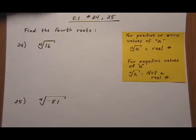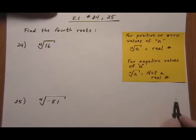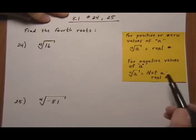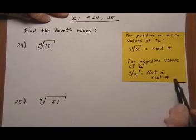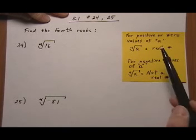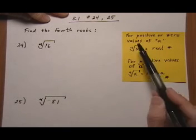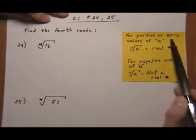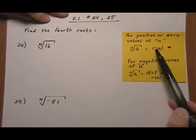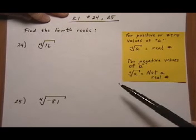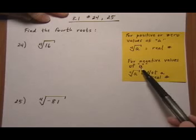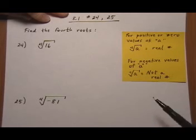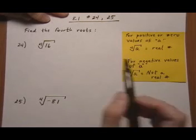Section 8.1, numbers 24 and 25. Find the fourth roots for the following problems. We're going to be using the properties on the right here, which are just like the square root properties, but they are different than the cube root properties. So for a fourth root, for positive or zero values of A, you get a real number answer. For negative values of A — a negative inside the radical — you get not a real number.